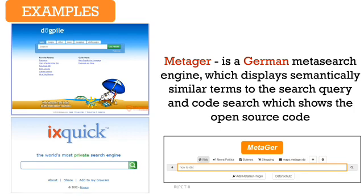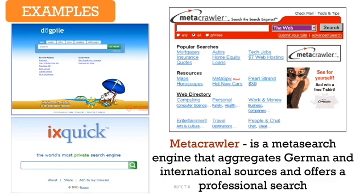Another is a German meta search engine which displays semantically similar terms to the search query, and CodeSearch, which shows open source code. Metacrawler is a meta search engine that aggregates German and international sources and offers a professional search.